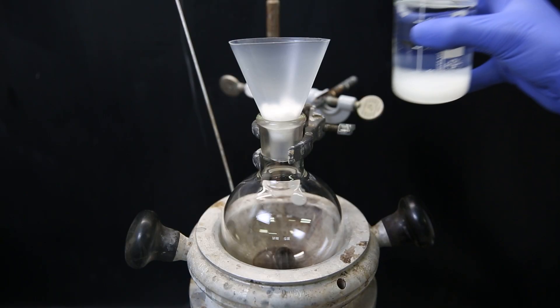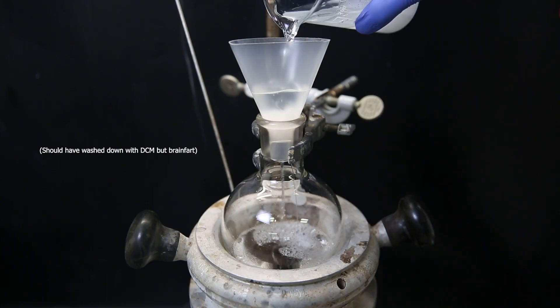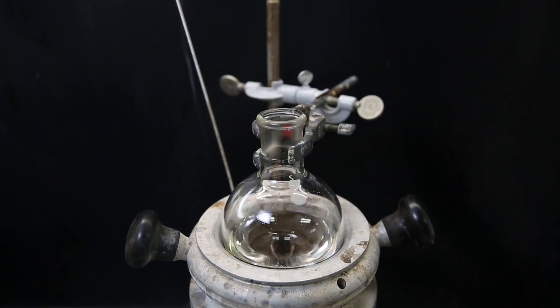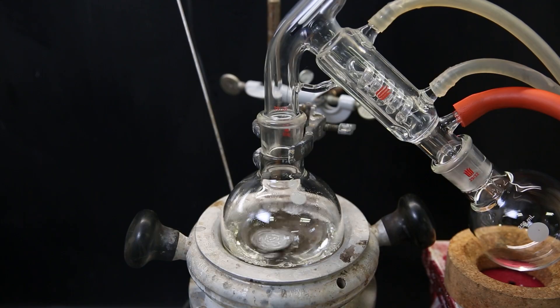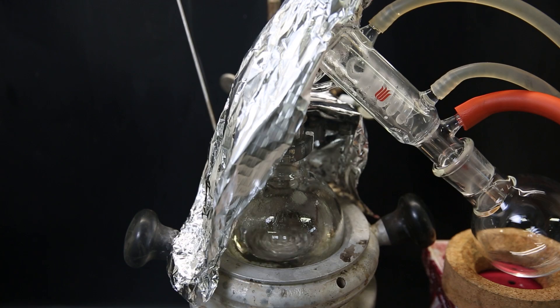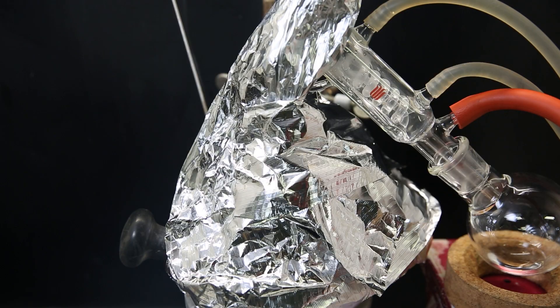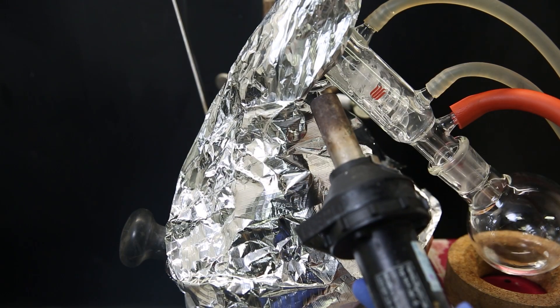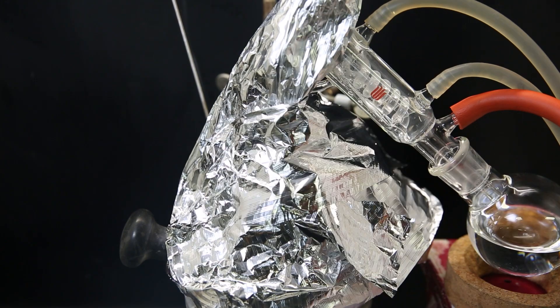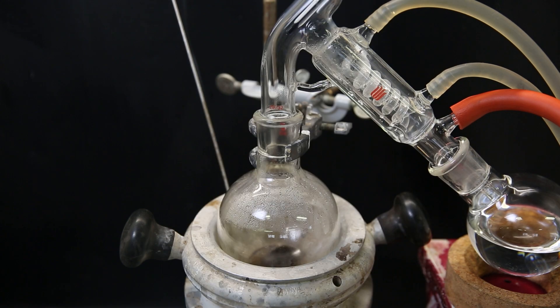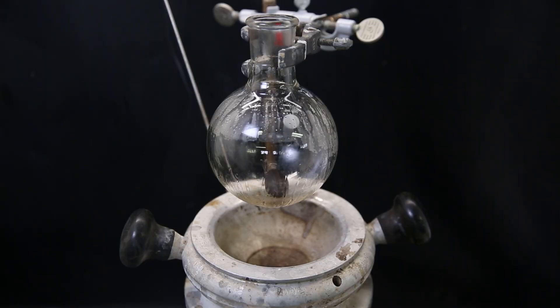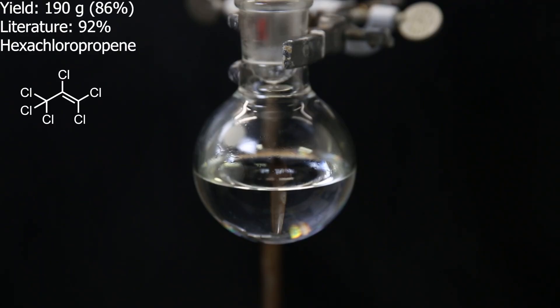I filter it through some cotton directly into a flask and then set the flask up for short path vacuum distillation. First I distill off the DCM and then swap the receiving flask, increase heat, and start distilling over the product. I assisted slightly with a heat gun. And after a while all of the product had come over as a clear liquid and only some brown stuff remained in the flask. The yield of hexachloropropene turned out to be 190 grams or 86%, which is slightly lower than literature but it's still good.